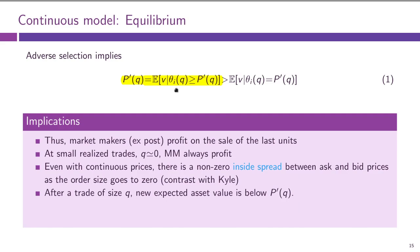In limit order book markets, the price is discriminatory. The market trader who submitted the market order will execute different parts of his order at different prices as he climbs up the book. This was the main idea from Wednesday.